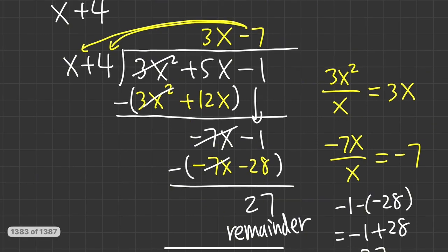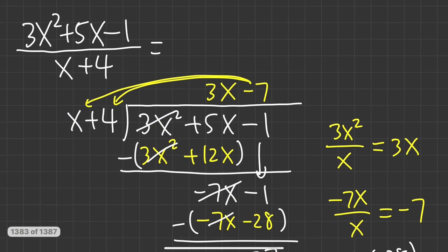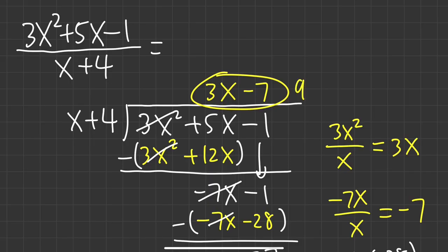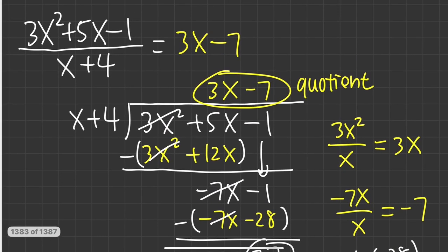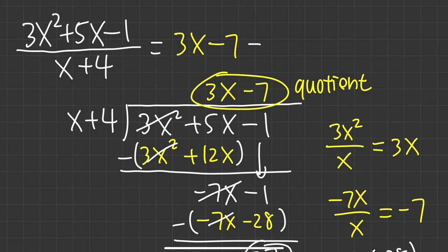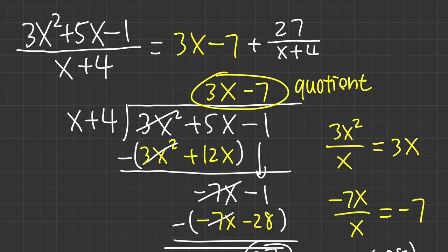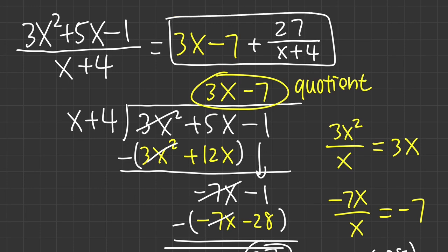So we're pretty much done. We just have to come back and present the answer. First, we write down the quotient, which is 3x minus 7. And since the 27 is the remainder and it's positive, we can say plus 27 over the original denominator, which is x plus 4. So this is how you present the answer. Now let's try another one.